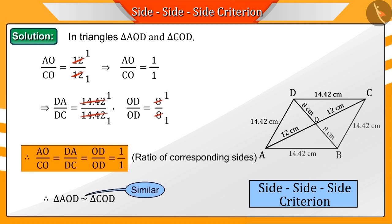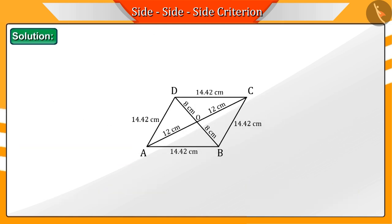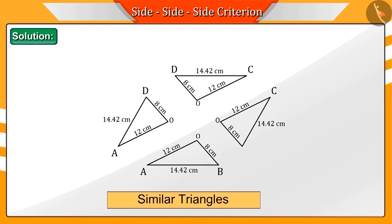This way, we can test the similarity of any two triangles in this rhombus. We can conclude that all four triangles—AOB, COB, COD, and AOD—are similar.